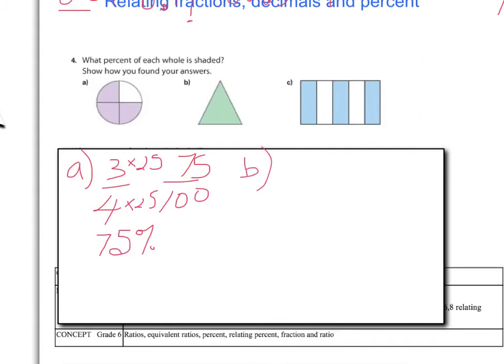B, we have 1. It's completely shaded in. 1 over 1, I guess, as a fraction. Percent, that really means the whole thing. When it's the whole thing, it's always 100%. So, not too bad there.